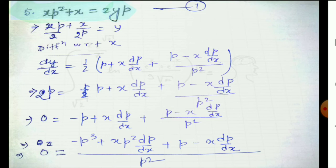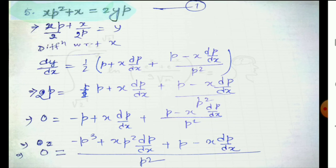For question 5, the given equation is xp² + x = 2yp. This is not in the form y = f(x, p), so we need to rearrange it. I divide by 2p, then differentiate. After differentiation, one term is in a standard form and another is in product form. Multiplying through by 2, we get terms: p² + p²·dp/dx·... − p − x·dp/dx. We need to factorize this.